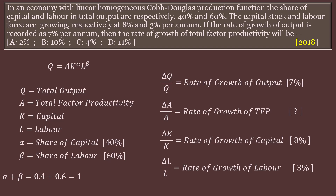The problem: In an economy with a linear homogeneous Cobb-Douglas production function, the share of capital and labour in total output are respectively 40% and 60%. The capital stock and labour force are growing respectively at 8% and 3% per annum. If the rate of growth of output is recorded as 7% per annum, then the rate of growth of total factor productivity will be. Options are: 2%, 10%, 4%, 11%. This question was asked in 2018.